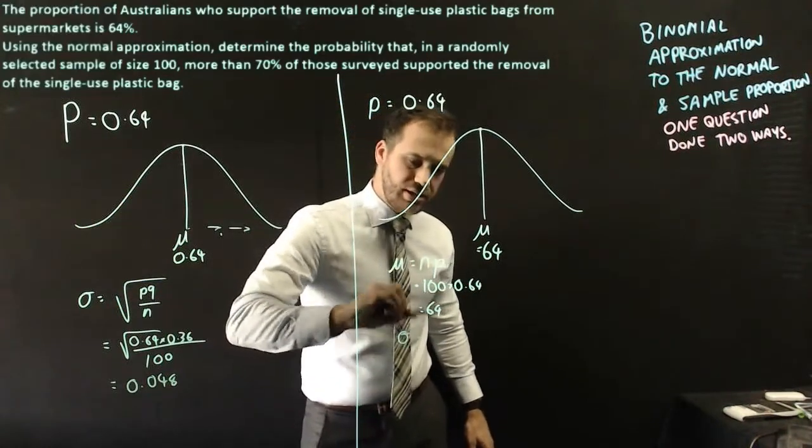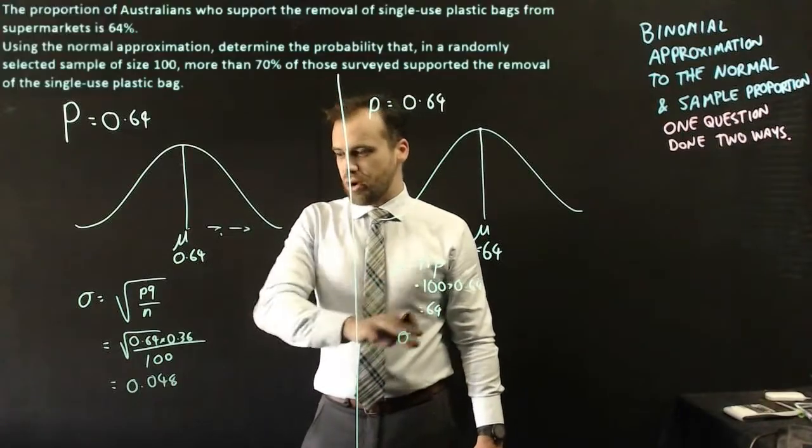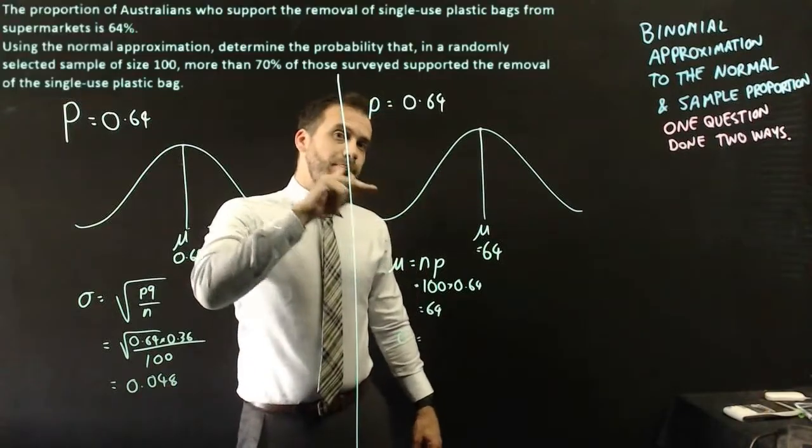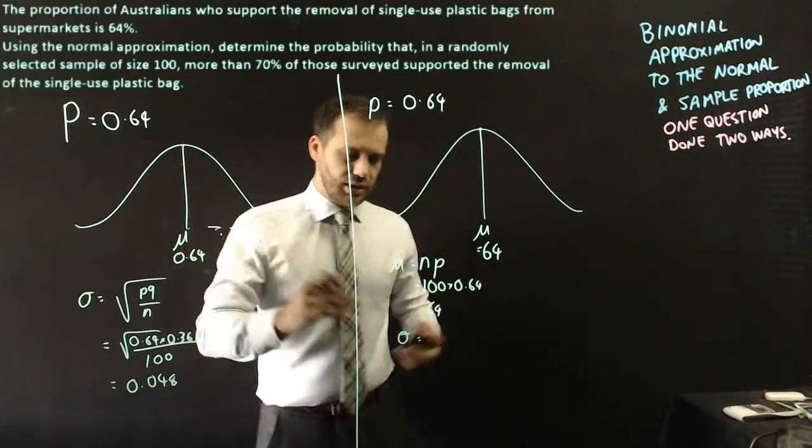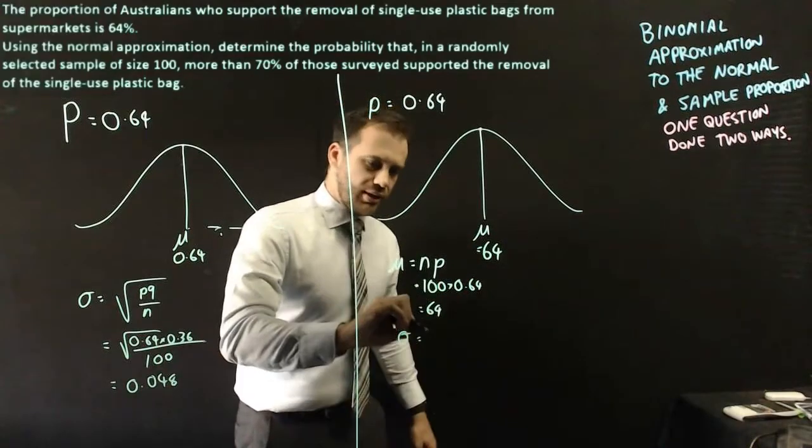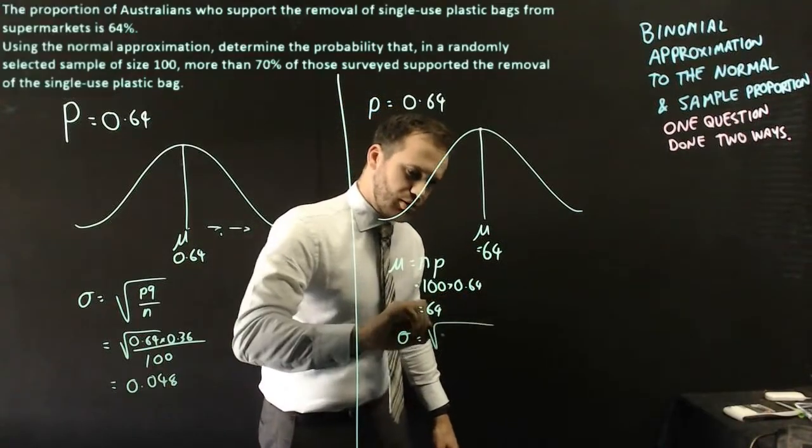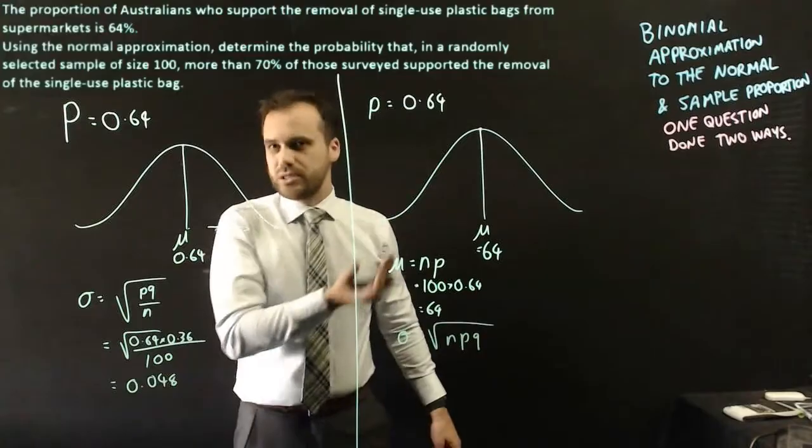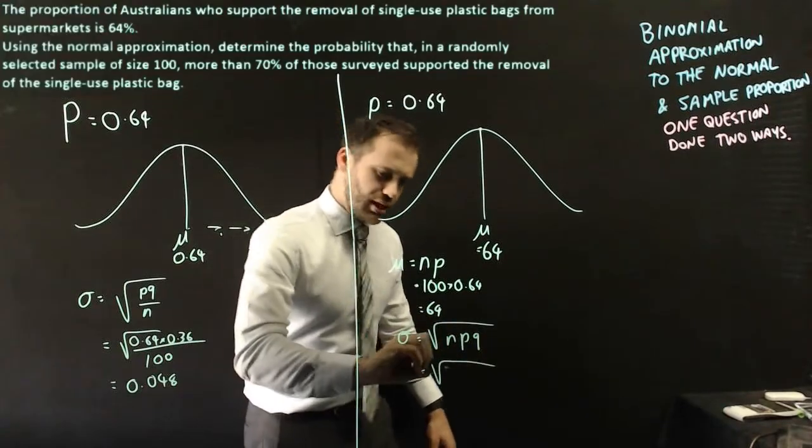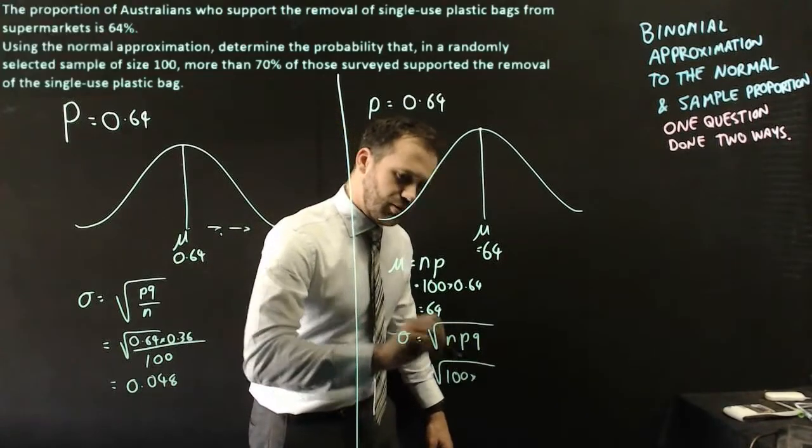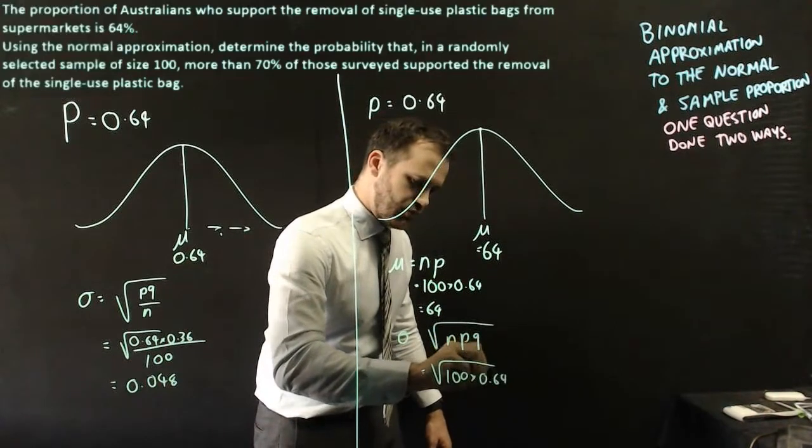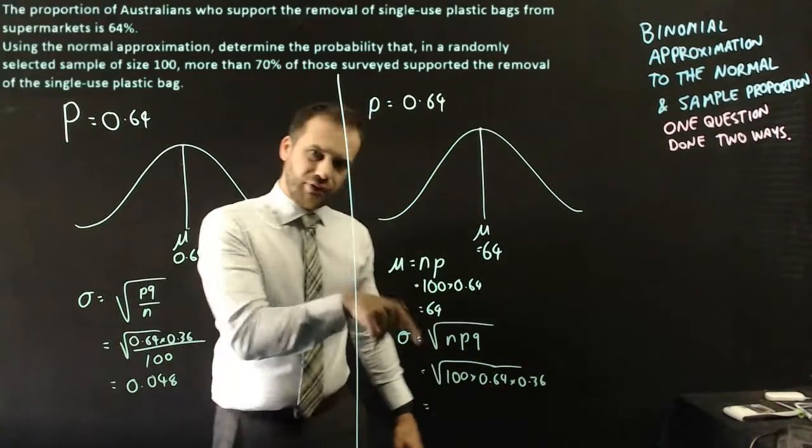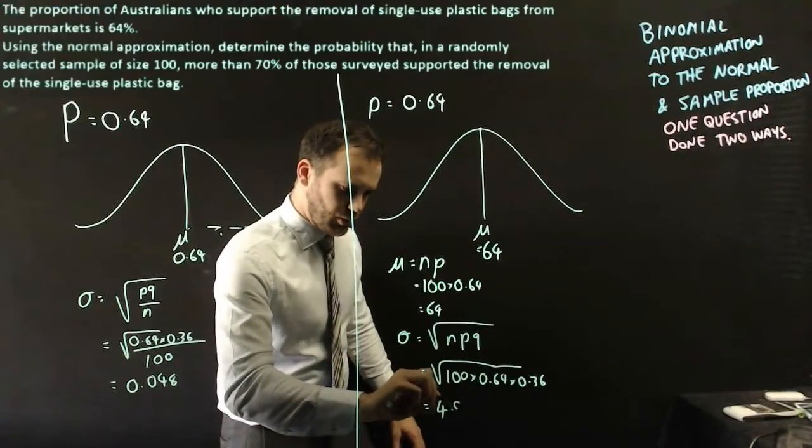Over here, our standard deviation is different. We're not trying to find the standard deviation of a sample proportion, we're trying to find the standard deviation of a binomial approximation to a normal, the actual number of people. That's going to be equal to the square root of the variance, which is npq, or np times 1 minus p. The numbers are all the same. 100 people, probability of success is 0.64 times the probability of failure, 0.36. But this is going to spit out a very different number, 4.8.